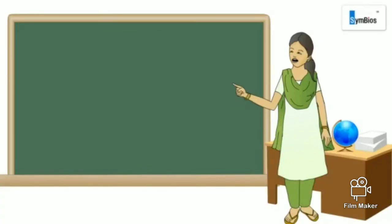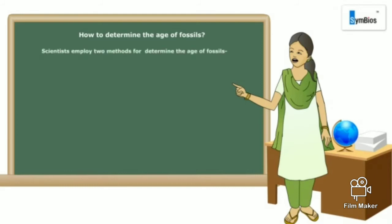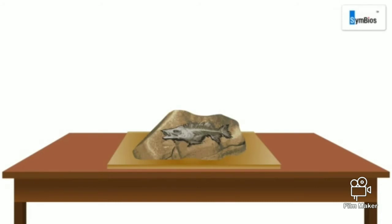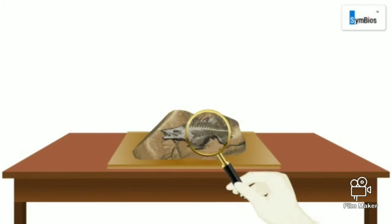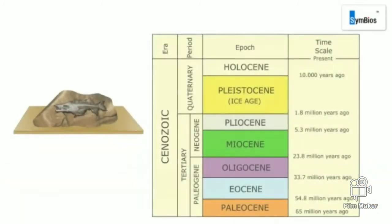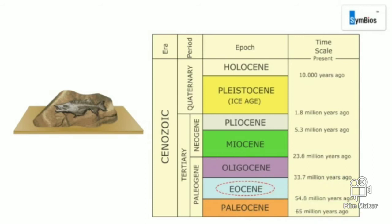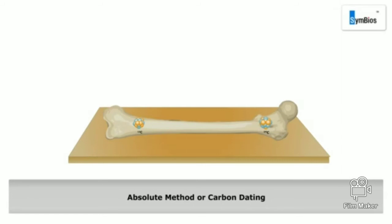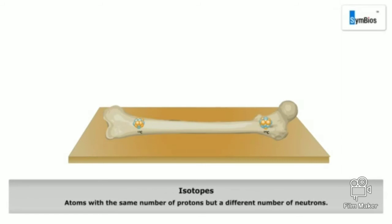Let us now understand how to determine the age of fossils. Scientists employ the relative method and the absolute, or carbon dating, method. In the relative method, scientists calculate the age of the rock which housed the fossil in correlation to the geological column. If the rock belongs to a period before 50 million years ago, it is believed that the fossil was formed around that time.